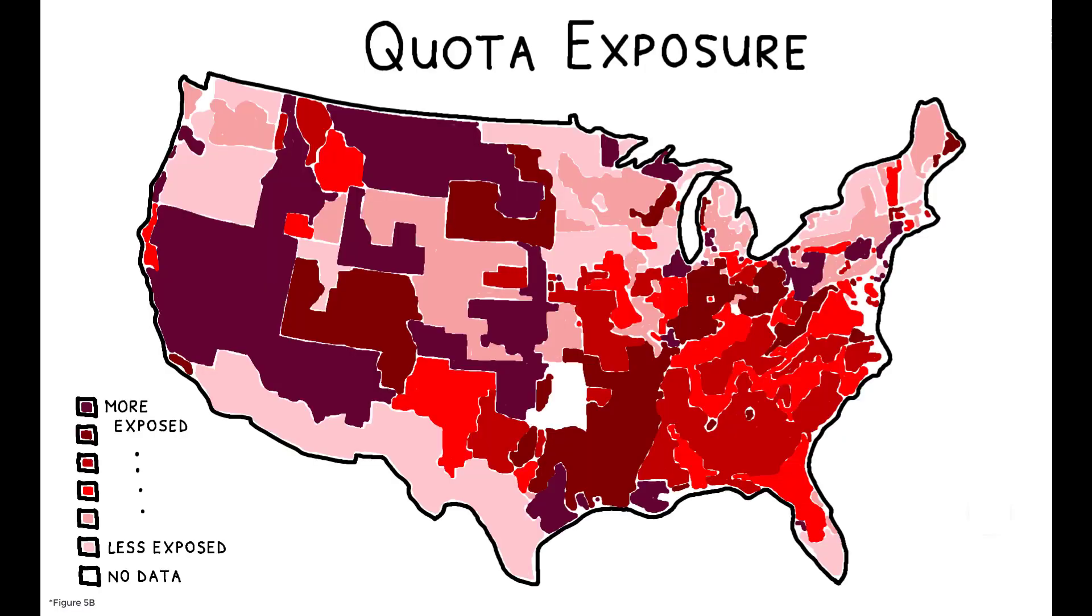This figure shows how the resulting measure varies across the U.S. after controlling for both regional factors and each market's baseline foreign-born population share. There is substantial variation in exposure even within the same state, and the authors estimate the causal effect of the quotas by comparing more exposed versus less exposed markets both before and after the border closures.